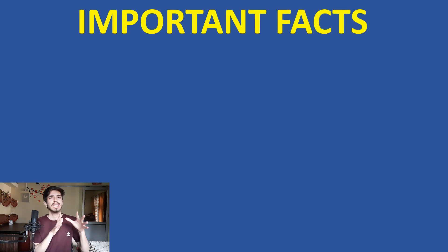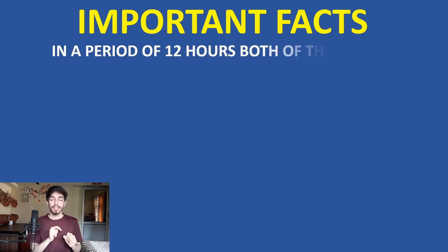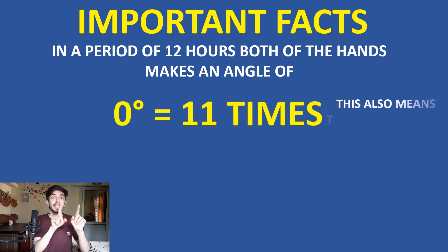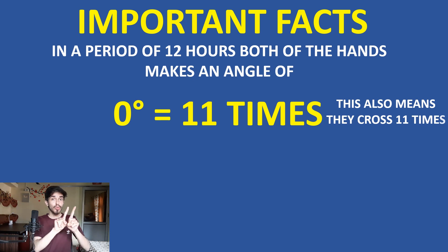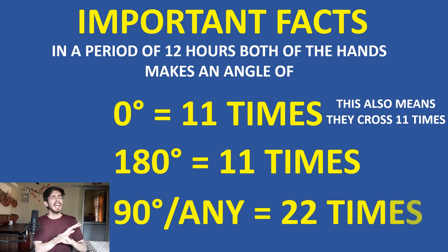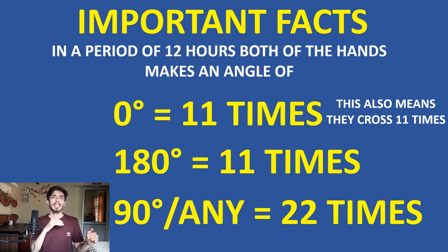Here come some really important facts from which direct questions come. In a period of 12 hours, both the hour hand and the minute hand make an angle of 0 degrees — that means they coincide — 11 times. They make an angle of 180 degrees, meaning they are in a straight line, 11 times. And they make an angle of 90 degrees and any other specific angle 22 times. This is really important information and direct questions come from these three facts.